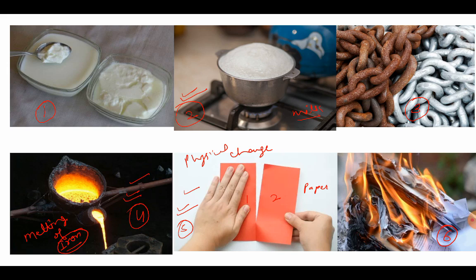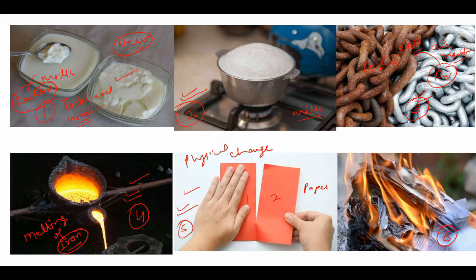Now if we pay attention to picture number 1, initially we have milk, and when we set it into curd, it changes and becomes curd. There is a sugar in milk called lactose, and that lactose changes into lactic acid of curd — so a new substance is being formed. In picture number 3, this is simple iron, but when iron comes in contact with air and moisture, it gets changed into a new substance: hydrated ferric oxide. So a new substance is formed in this case also.